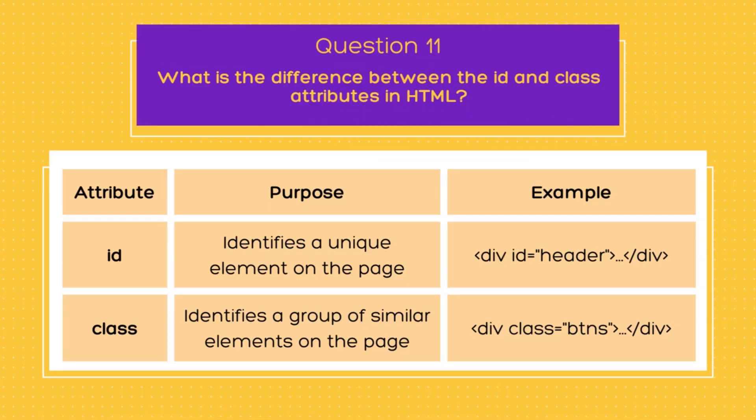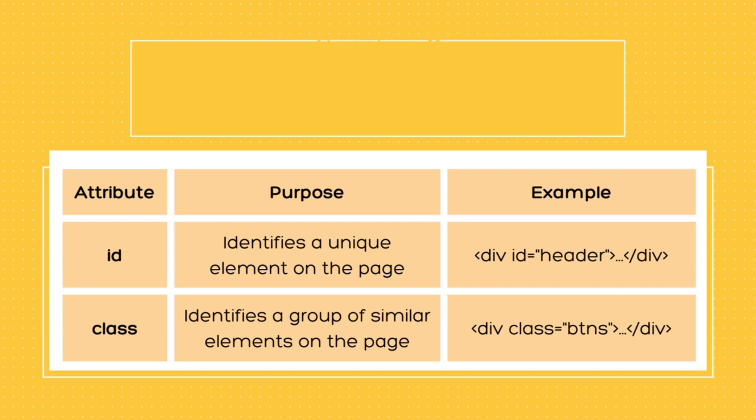The very first question on today's list is: what is the difference between the id and class attributes in HTML? The key difference is that the id attribute identifies a unique element on the page, while the class attribute identifies a group of similar elements. The id attribute is used to uniquely identify a particular element and can be assigned to only one element per page. It is commonly used for JavaScript and CSS manipulation, as it allows developers to easily target and manipulate specific elements on the page.